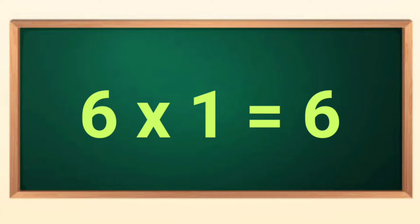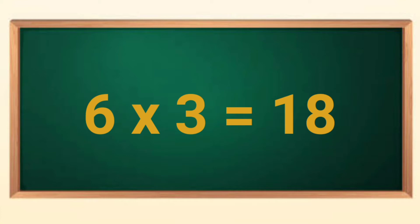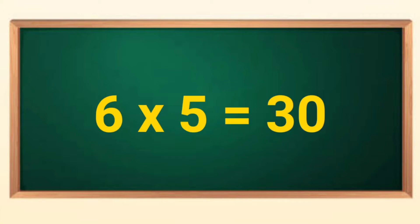Six ones are six. Six twos are twelve. Six threes are eighteen. Six fours are twenty-four. Six fives are thirty.